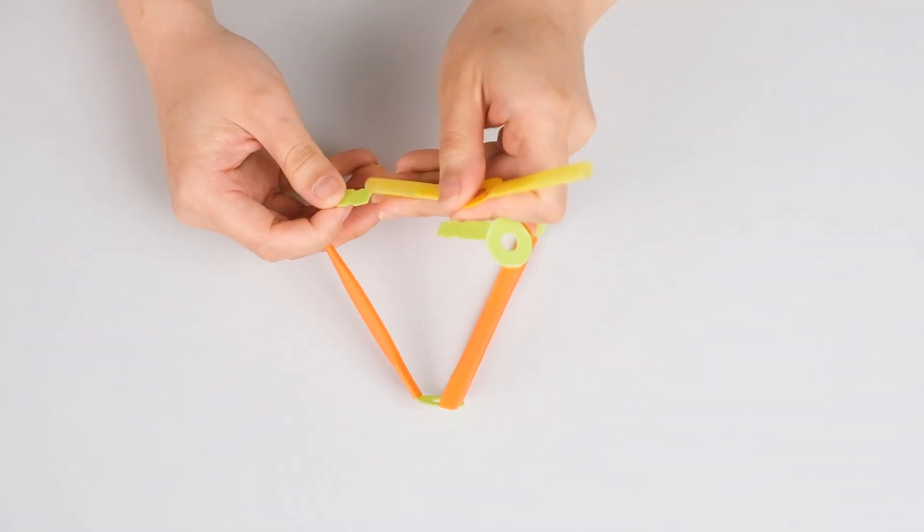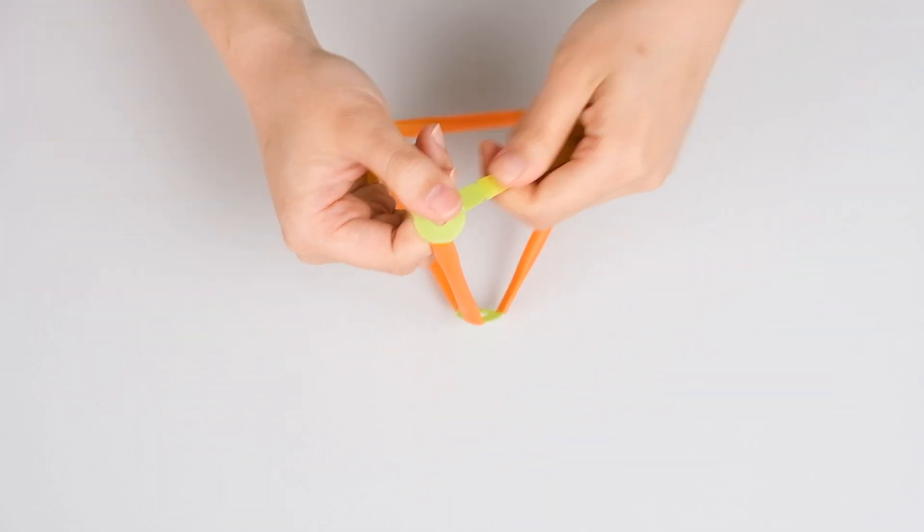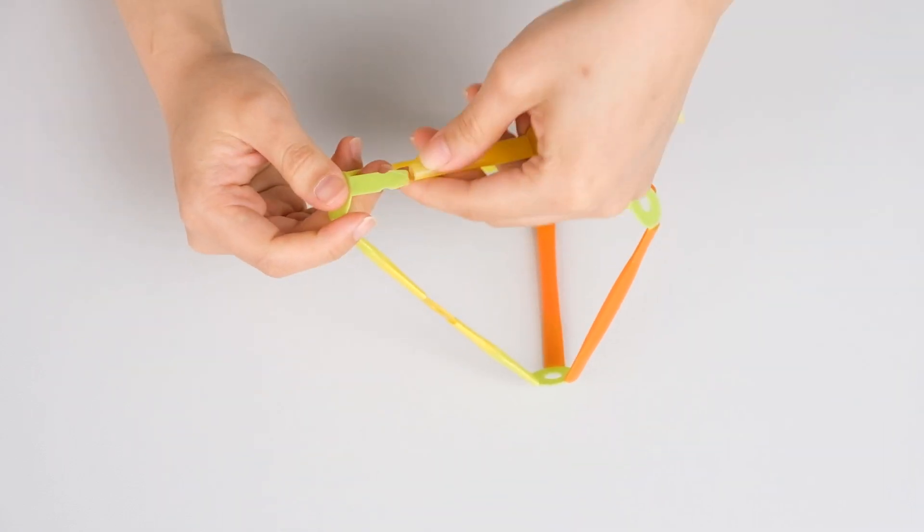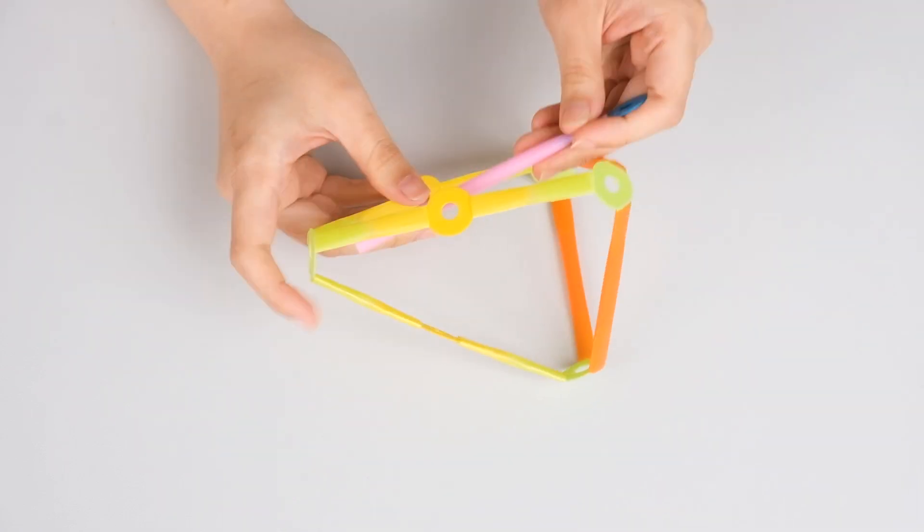There are many different strategies for building with Strawbies. Start with a simple shape and increase complexity by exchanging out straws and adding more components.